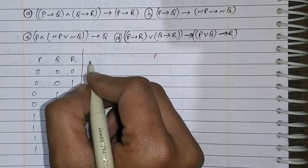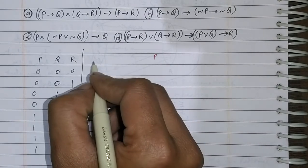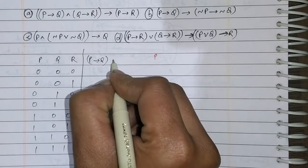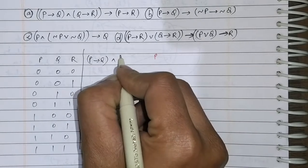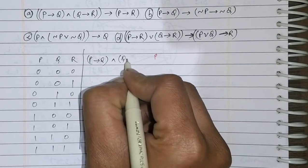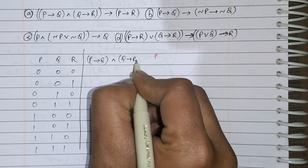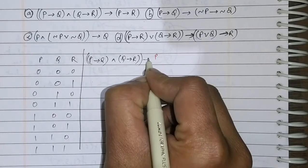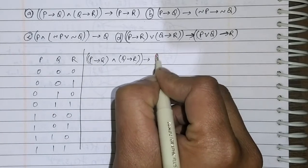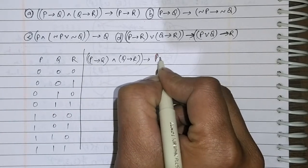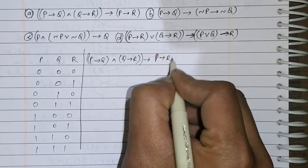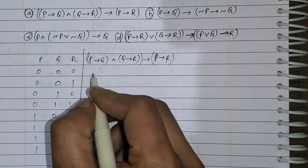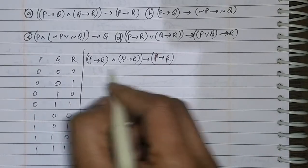The first option is: (P implies Q) and (Q implies R), whole implying (P implies R). We will evaluate this one by one.